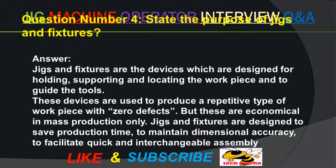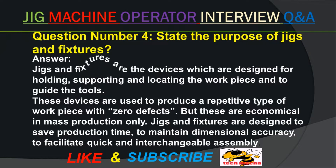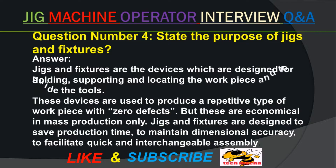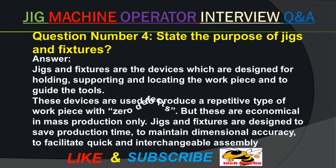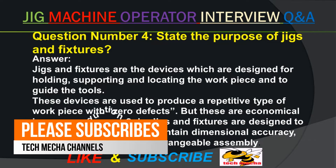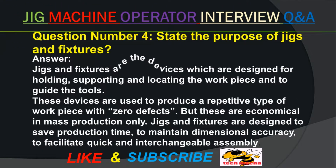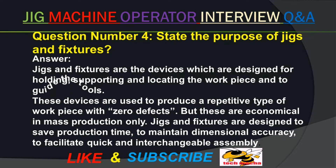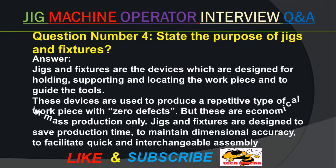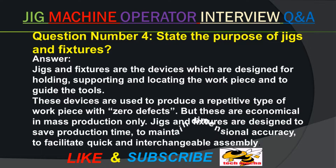Question number four. State the purpose of jigs and fixtures. Answer. Jigs and fixtures are the devices which are designed for holding, supporting and locating the workpiece and to guide the tools. These devices are used to produce a repetitive type of workpiece with zero defects, but they are economical in mass production only. Jigs and fixtures are designed to save production time, to maintain dimensional accuracy, and to facilitate quick and interchangeable assembly.